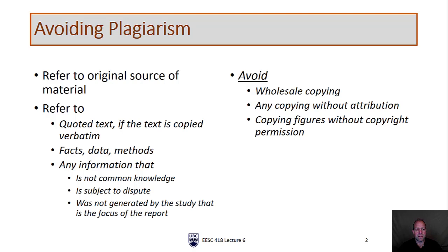There are a few different types of information that we'll refer to. The first and easiest is quoted text. If we copy a line of text or a sentence or two from another author, that's fine as long as we put it in quotation marks and provide a reference. In most academic writing, that is minimized — most journal papers would have at most one or two quoted references, and usually none at all. As you become a better writer, you'll be able to summarize and paraphrase other writers more effectively.